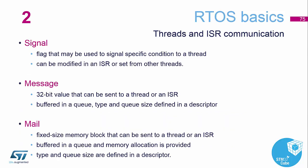A signal is a way of sending one bit or a condition from one thread to another thread. If you want to send more information, you can use a message to send a full 32-bit value between different threads in the system. The final way is to use mail or a mailbox, which means you can send a whole block of memory between different tasks or threads within the system.